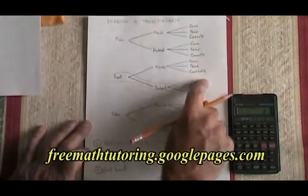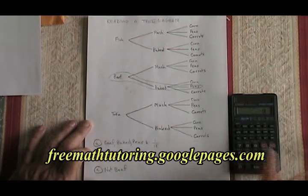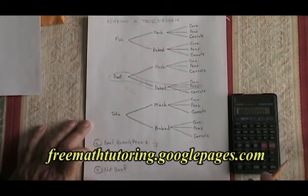There are six that involve beef and six that involve tofu, so the total is 18 different combinations that can be made. So one out of 18 of the combinations has these three foods in it. We can simplify this fraction and convert it to a decimal. One divided by 18 is 0.055, and the five repeats.